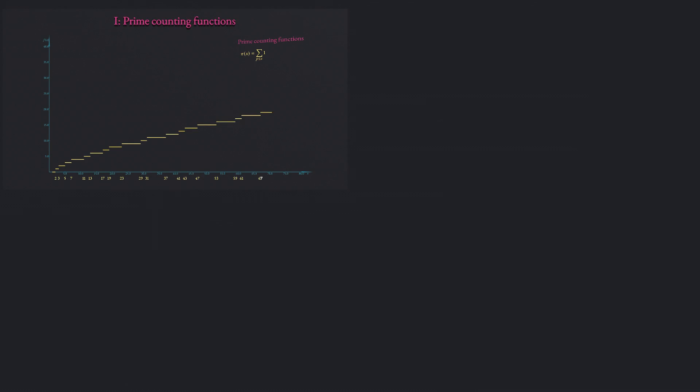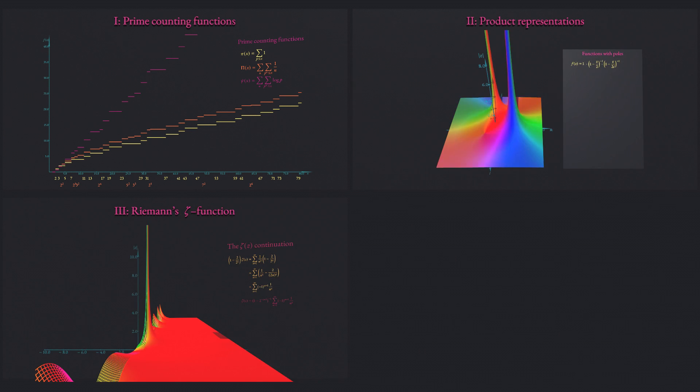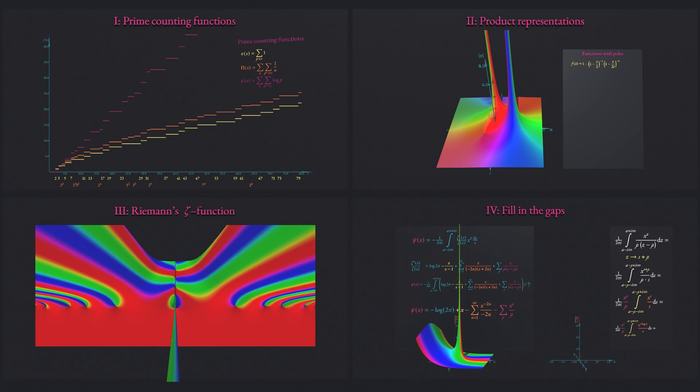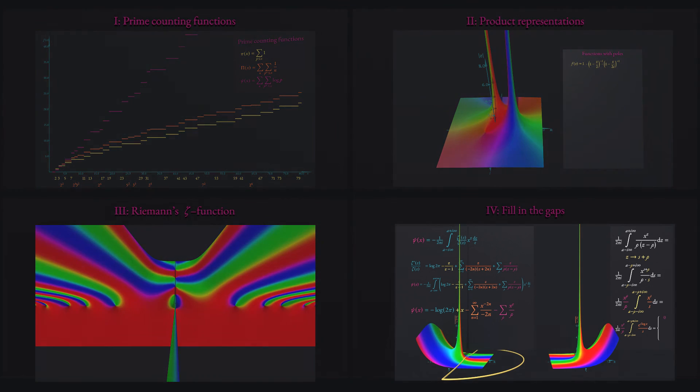First the psi function is explained and motivated as a prime counting function. Secondly we will talk about zeros and poles of real and complex functions. The third part deals with the Riemann zeta function and in the last part a rather formal verification of the result is presented.